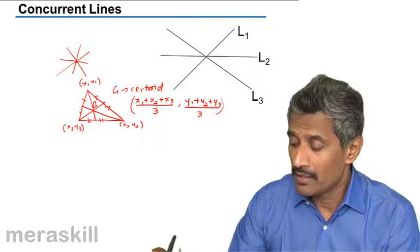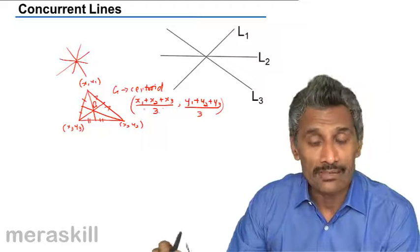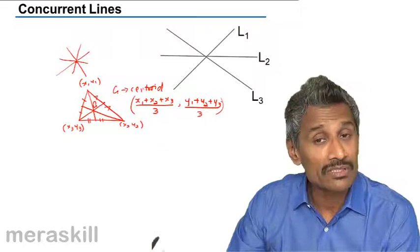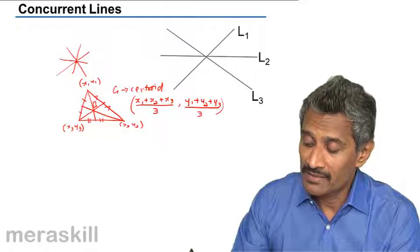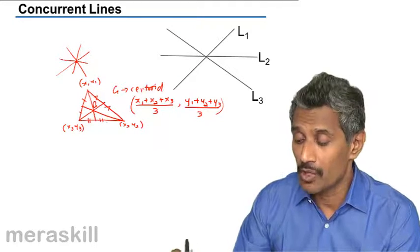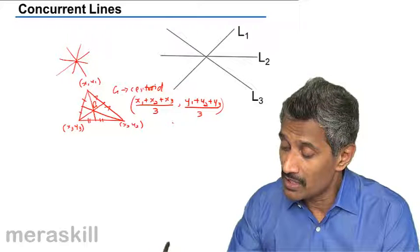So this is just to tell that the centroid is a point of concurrence of all three medians. Similarly, if you have any triangle like this, you will have altitudes.